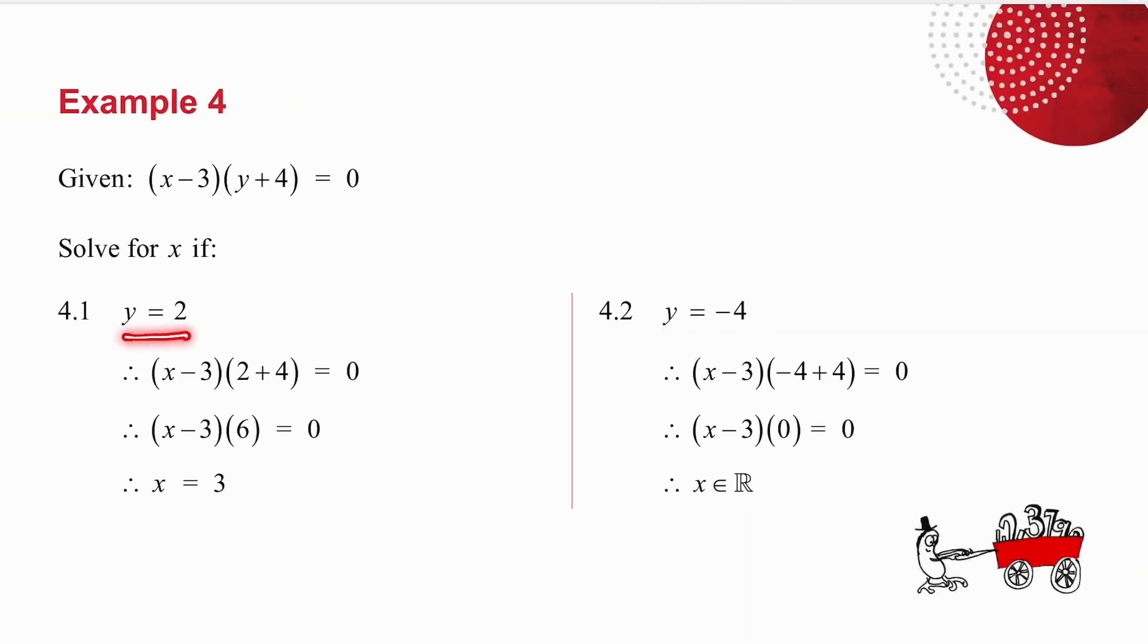If y is equal to 2, in place of y, I put 2. 2 plus 4 is 6. Now, how do I get two things to multiply to give me 0?